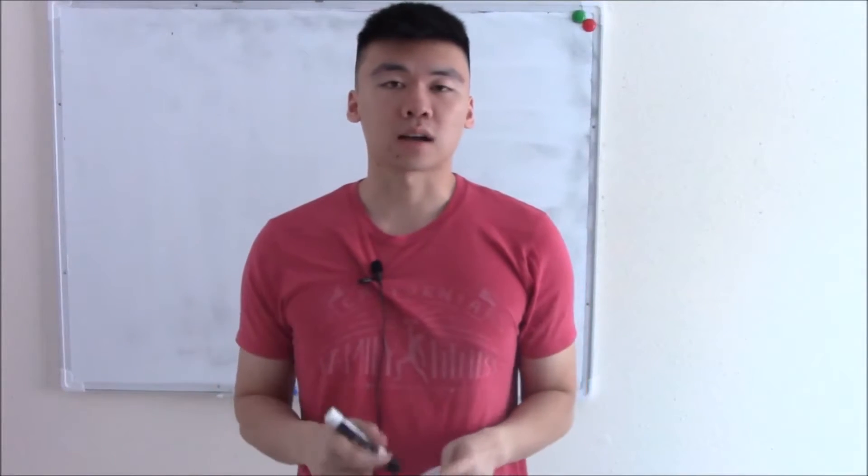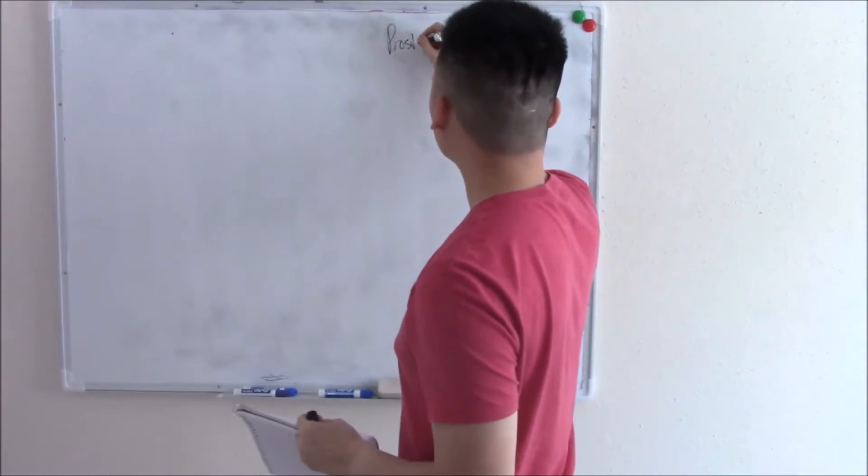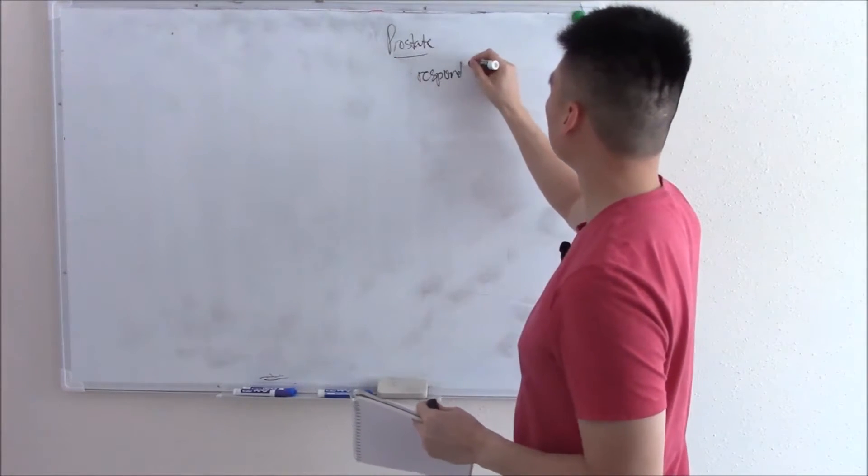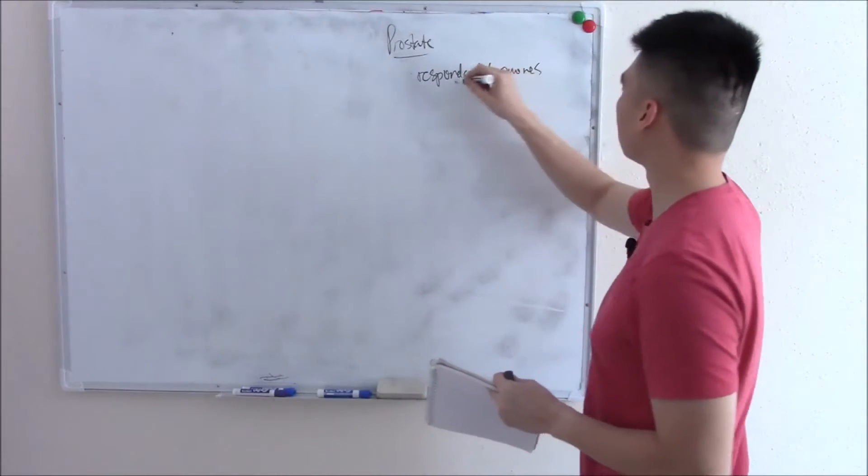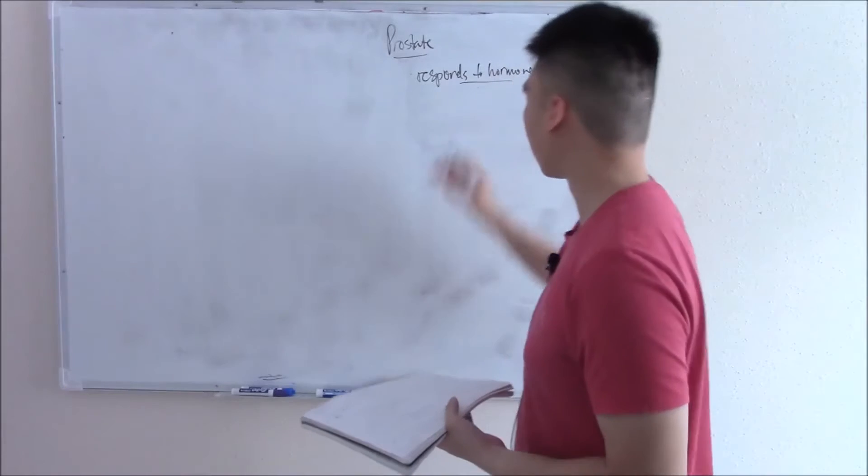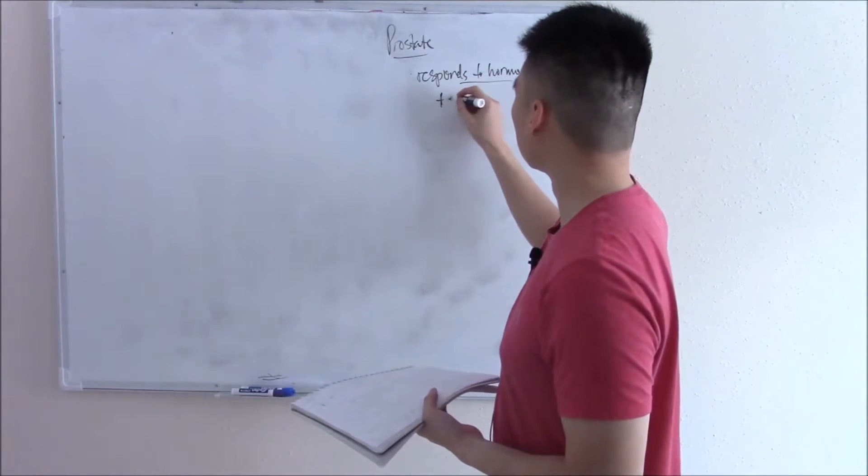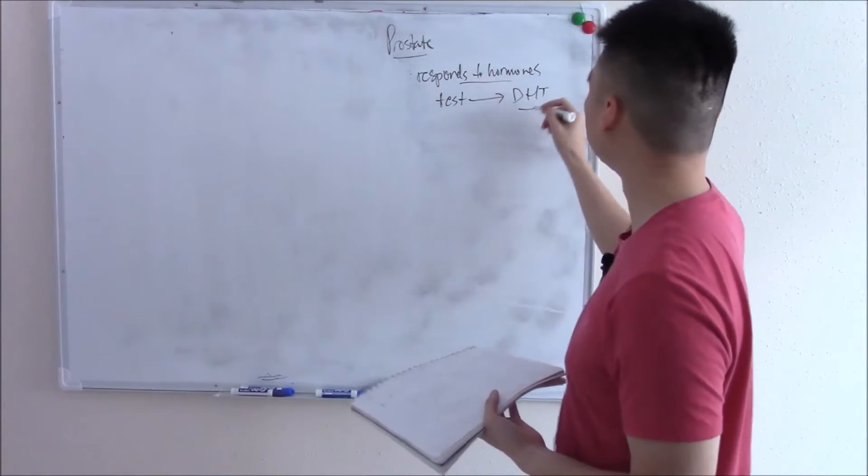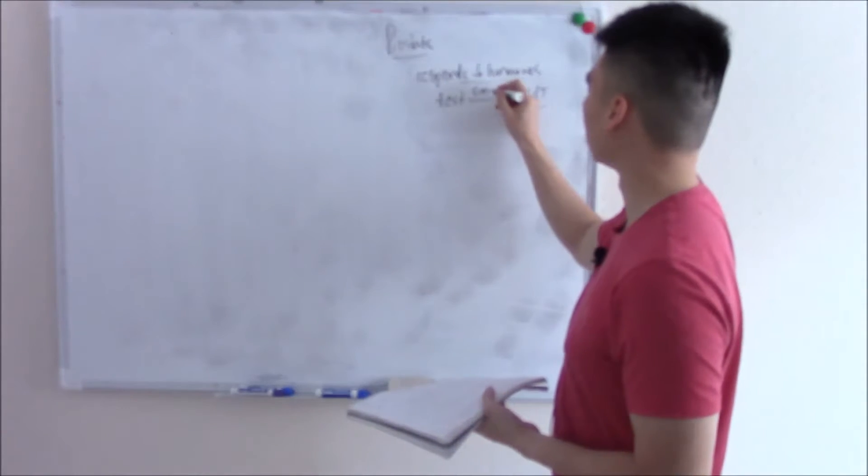This video wraps up our reproductive block and covers the prostate. The prostate is a gland that responds to hormones, namely androgens, and also makes them. This is where testosterone turns into DHT via 5-alpha reductase.